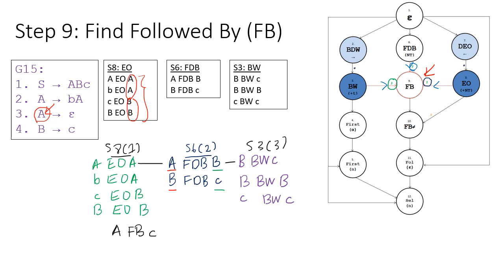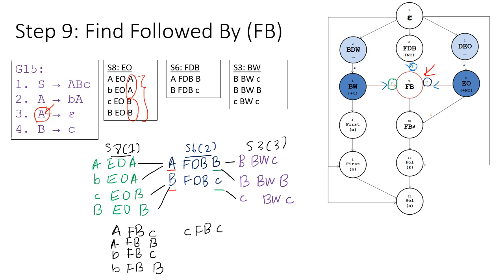Continuing: because we have B EO A, A FDB B, and B BW C, we get B FB C. Because we have A EO A, A FDB B, and B BW B, we get A FB B, and similarly B FB B. Then C EO B, B FDB C, and C BW C gives us C FB C. Finally, B EO B, B FDB C, and C BW C gives us B FB C. These are all the FB relations derived from step 9.